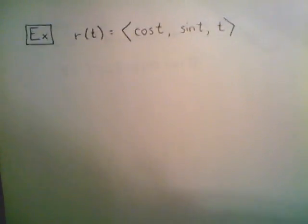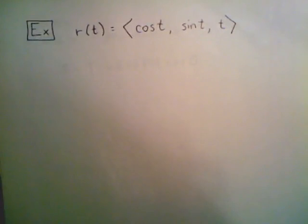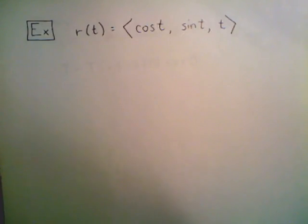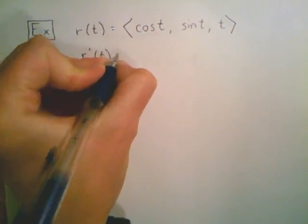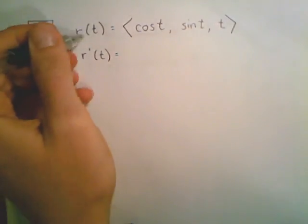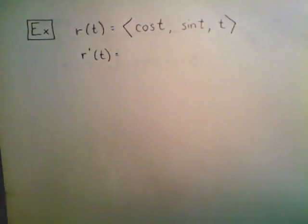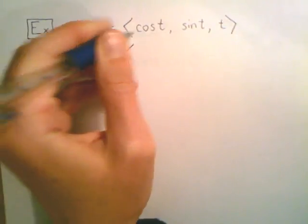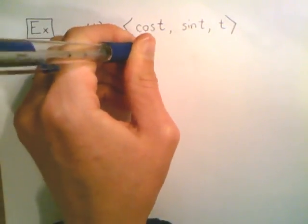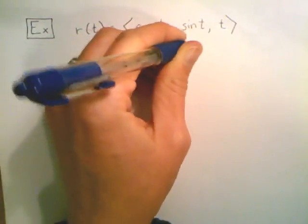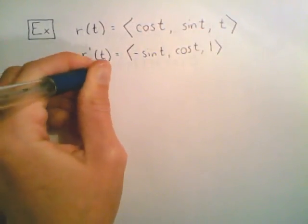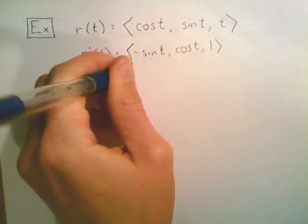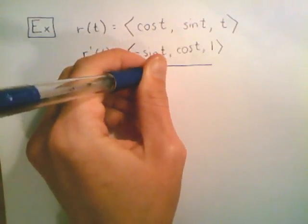Now let's do an example. Let r of t equal (cos t, sin t, t) — our classic helix. I want to compute the unit tangent vector. I'll keep organized by listing steps first and then computing. The derivative r prime of t is (negative sin t, cos t, 1), since the derivative of cosine is negative sine, the derivative of sine is cosine, and the derivative of t is 1.